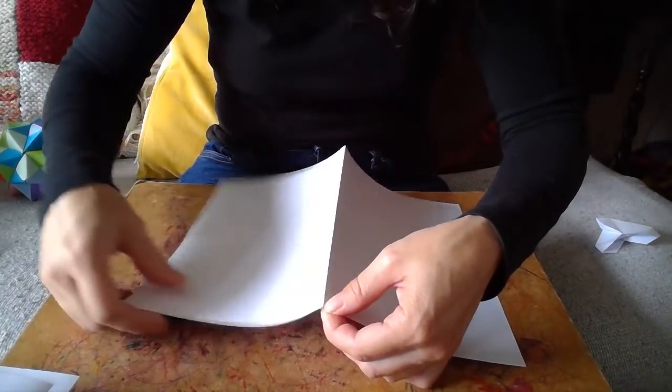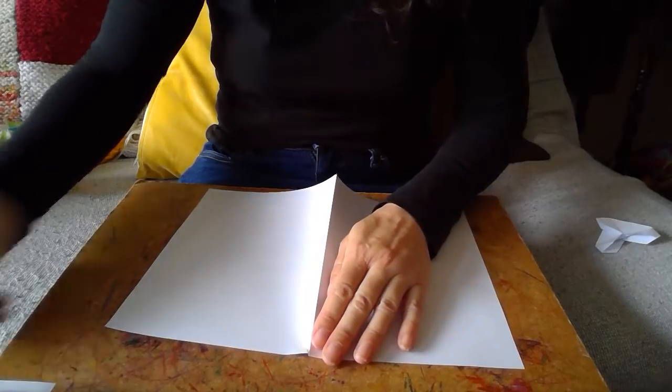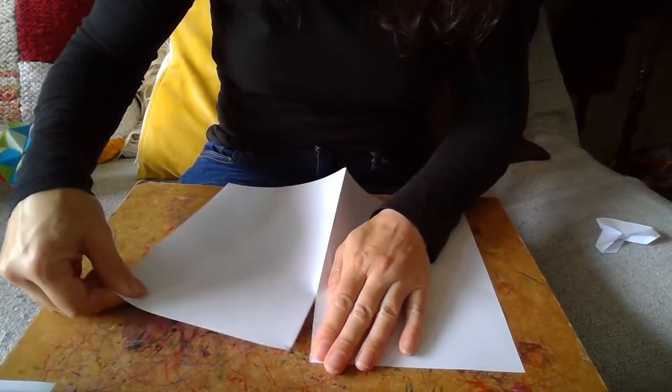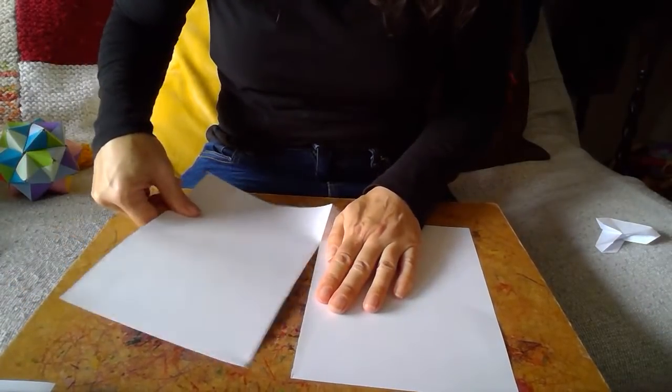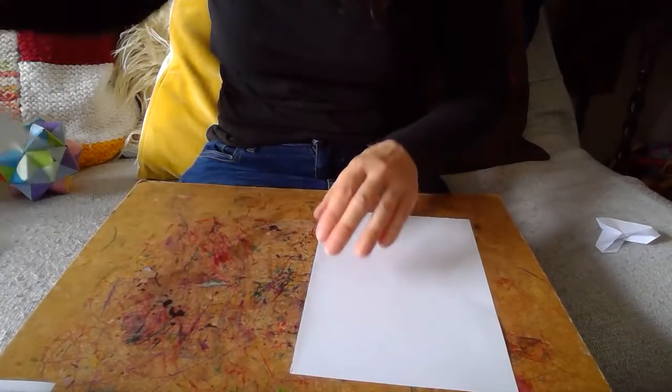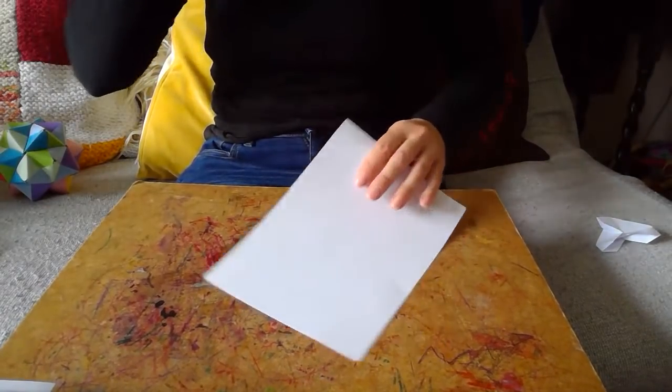Next I'm going to make a little tiny nick, put my hand nice and close to the edge there and you should be able to tear off that. You could use scissors but actually tearing is quite accurate so you don't need scissors.